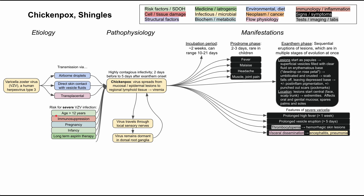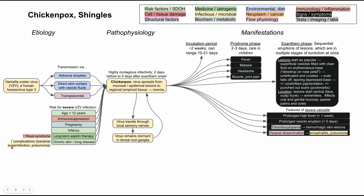Additional risk factors for severe varicella include long-term aspirin therapy, which predisposes patients to Reye syndrome — aspirin should not be given to young children. Chronic skin or lung diseases also predispose to severe infection, leading to complications like bacterial superinfections and pneumonia. If the lungs are already compromised, the inflammation caused by chickenpox can worsen the situation and increase susceptibility to bacterial superinfection.